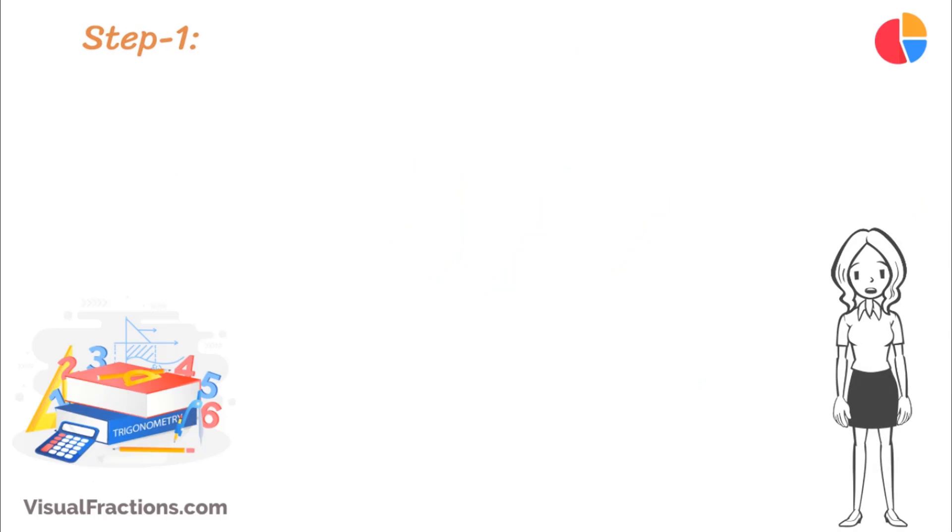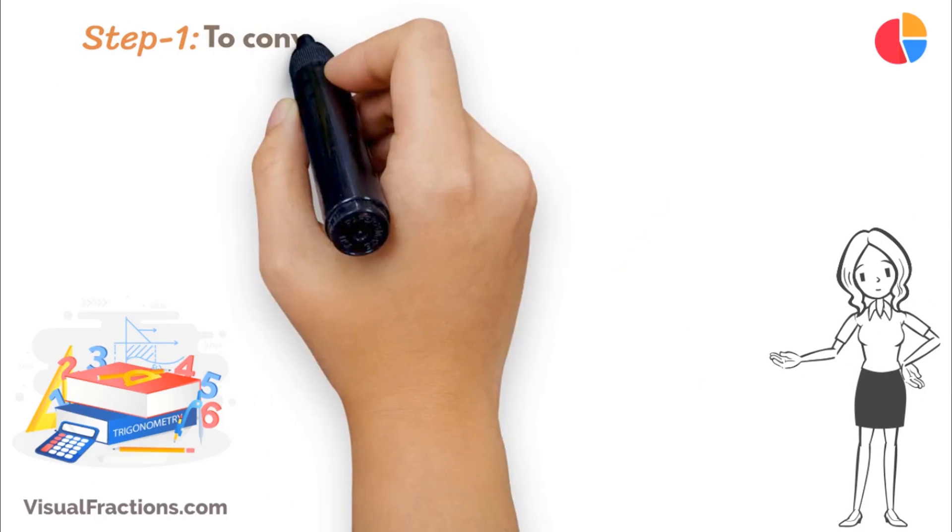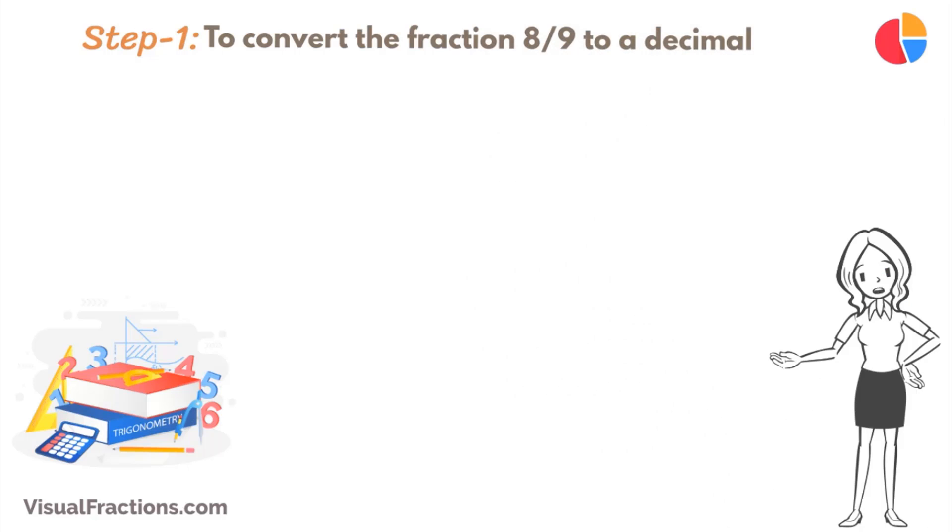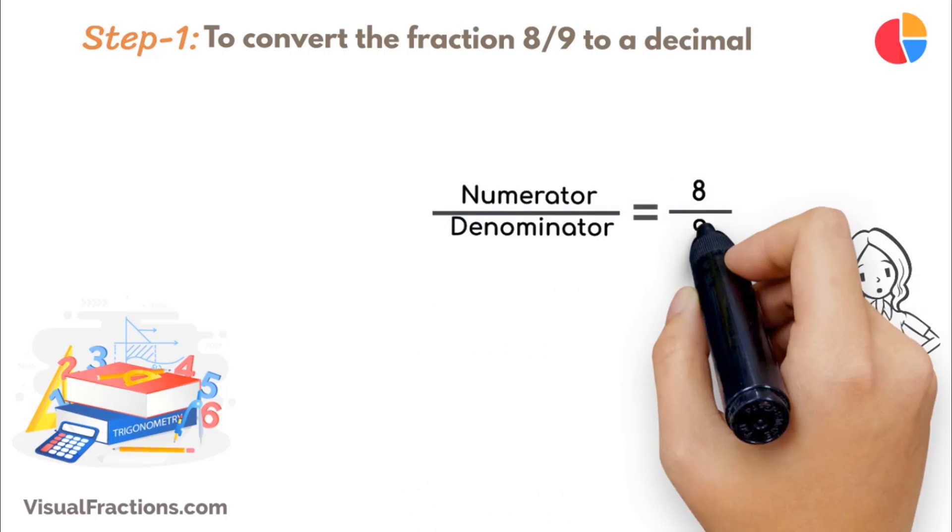The first step in converting the fraction 8 ninths to a percent is to convert this fraction to a decimal. We do this by dividing the numerator, the top number, which is 8, by the denominator, the bottom number, which is 9.